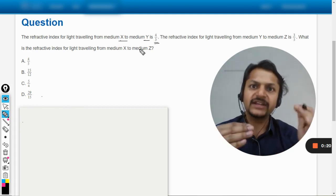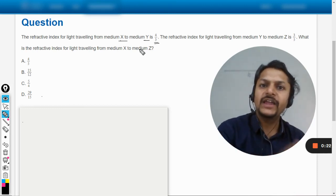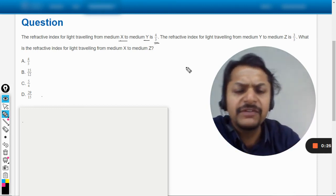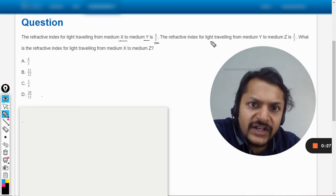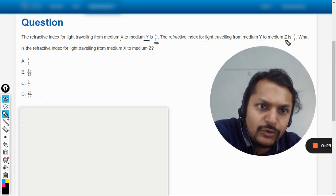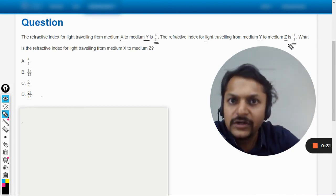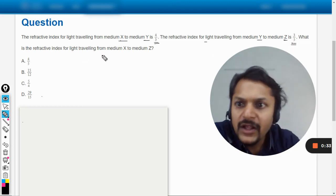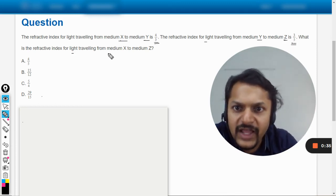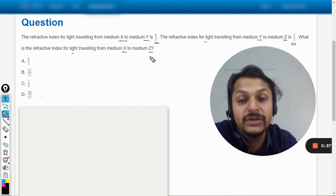Because we take the ratio of the refractive index of Y divided by that of X. Anyways, let us move. The refractive index of light traveling from medium Y to medium Z is 3 by 5. What is the refractive index of light traveling from medium X to medium Z?